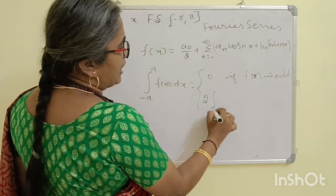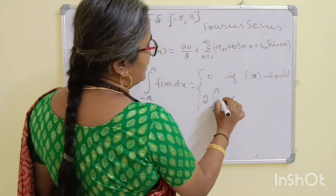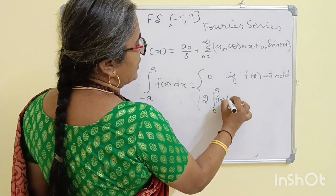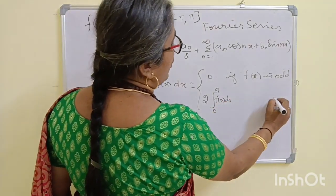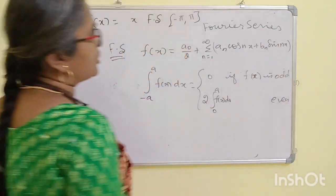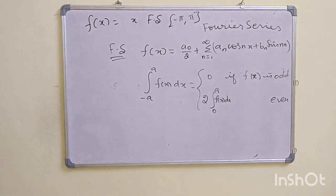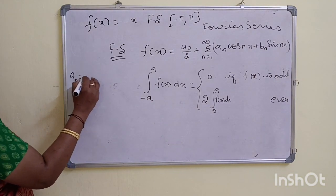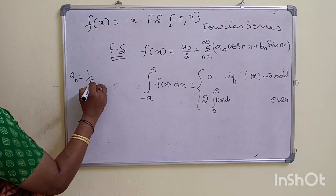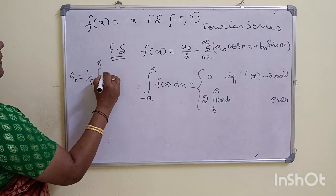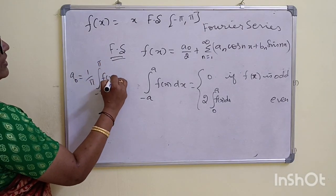For an even function, the integral becomes 2 times the integral from 0 to A of f(x) dx. Since f(x) is an odd function, A0 = (1/5) times the integral from -5 to 5 of f(x) dx.